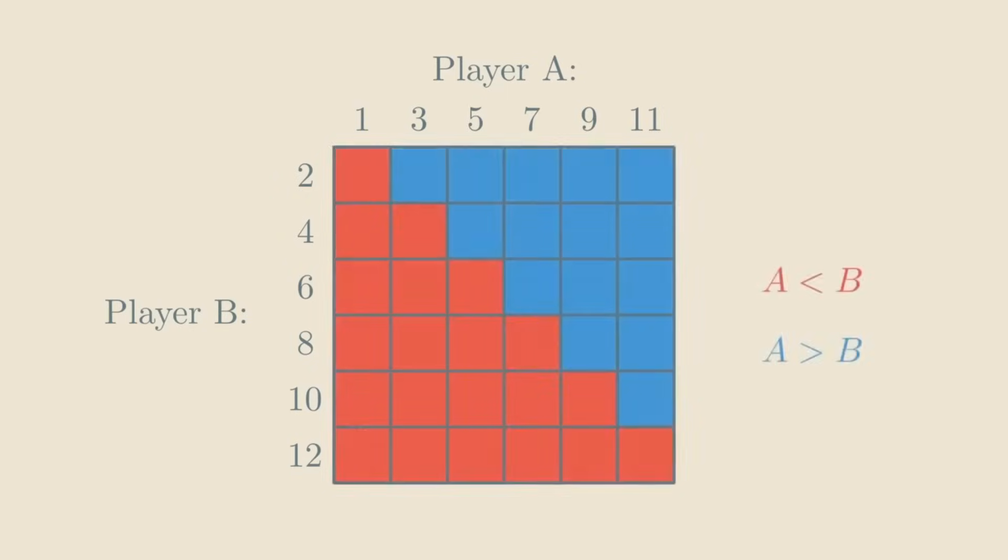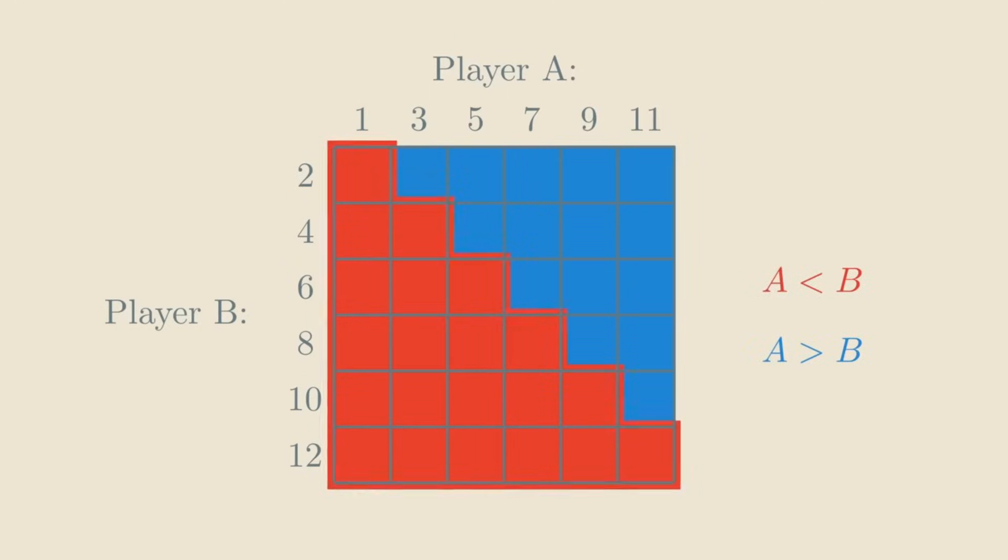For example, these dice do not work. Since there are more red squares than blue squares, A would have the smaller number more often. But there is a solution. Do you see it? Feel free to pause the video and try and find it.